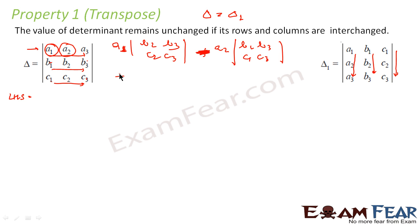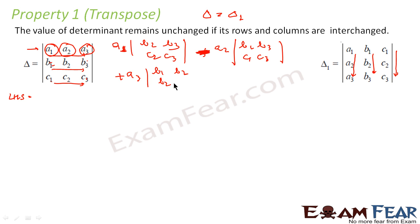Now take a3. You remove its row and its column, and you are left with elements b1, b2, c1, c2. So you get the minor with b1, b2, c1, c2.